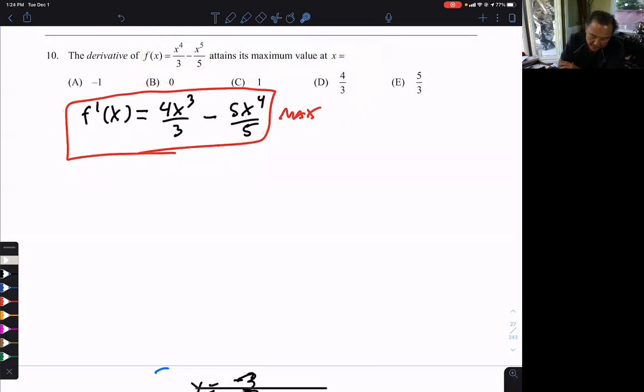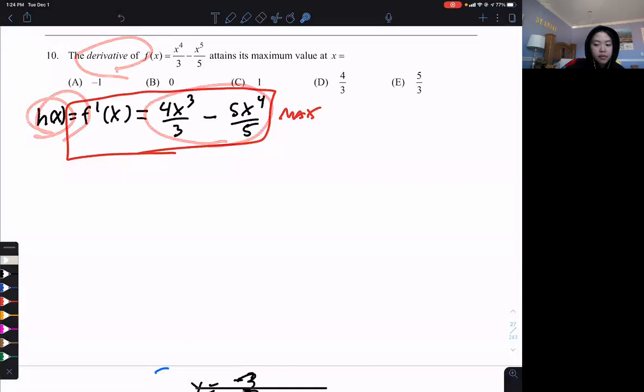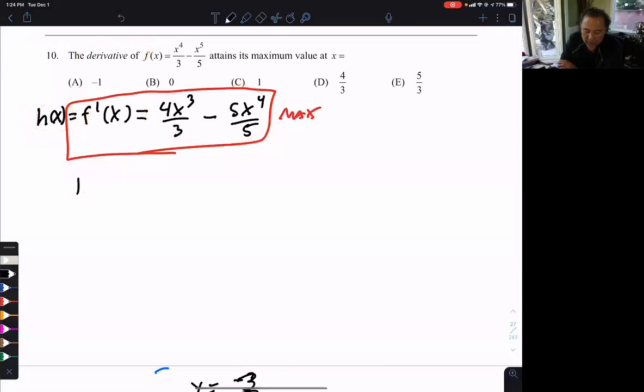So I'm going to call this a new name. I'm going to call f prime h. So if I asked you what's the maximum of h, what would you do? You would take the derivative of h to find the critical points. So to maximize the derivative, I call h the derivative. I want to maximize h. So where will that happen at the critical points?